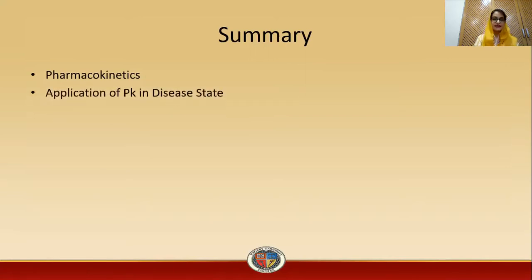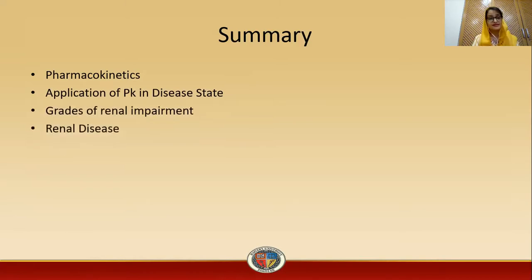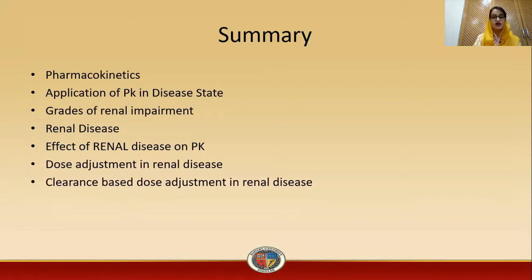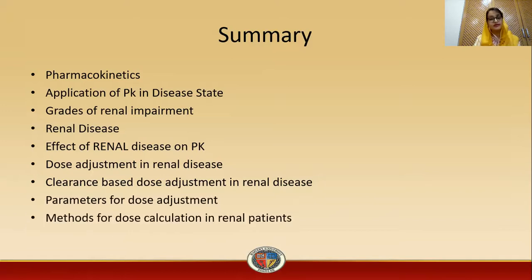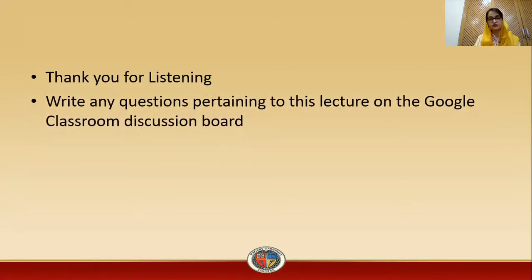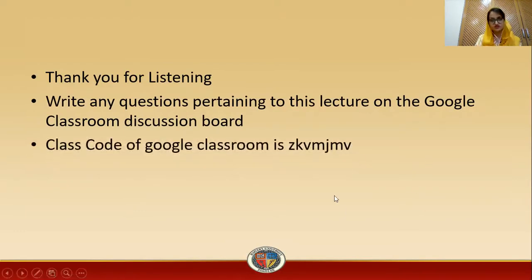In summary, we have studied pharmacokinetics, application of pharmacokinetics in disease state, grades of renal impairment, renal disease, effect of renal disease on pharmacokinetics, dose adjustment in renal disease, clearance-based dose adjustment, parameters for dose adjustment, methods for dose calculation in renal patients, and five GFR measurement methods. Thank you for listening. If you have any questions pertaining to this lecture, you can ask on the Google Classroom discussion board.